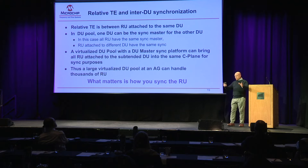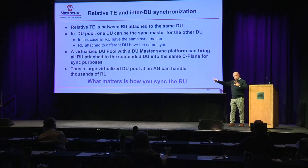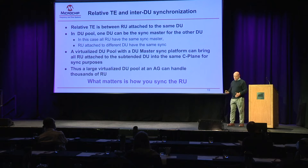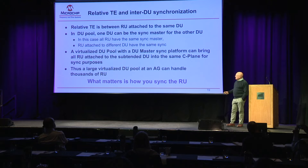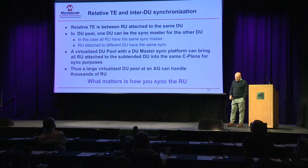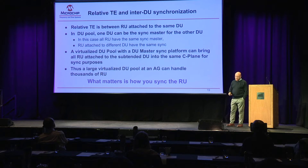In Rakuten in Japan, they have a virtualized DU pool with a DU sync master and up to 600 small cells talking to that DU pool, with all RUs attached across the fronthaul network. The virtualized DU with a sync master platform can then be attached to subtended DUs in the same C-plane for sync purposes — so thousands of RUs talking to a DU pool.